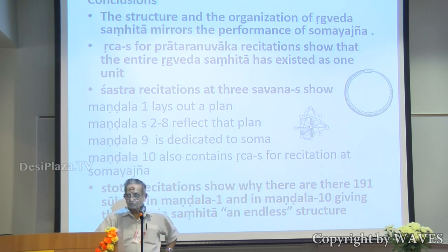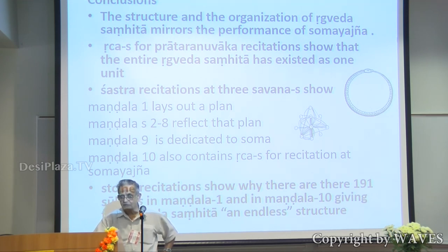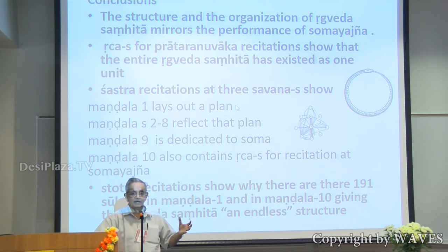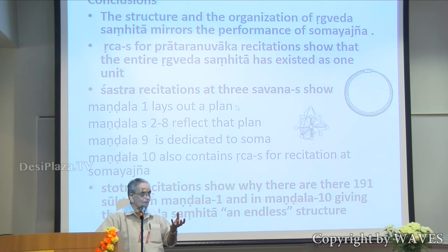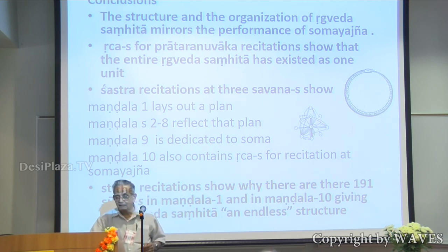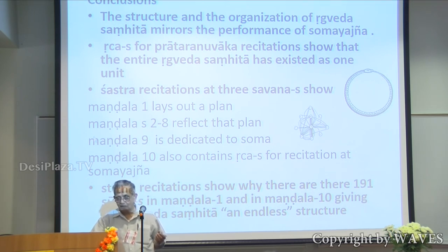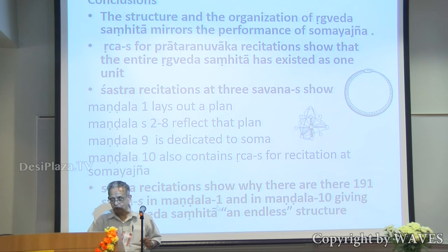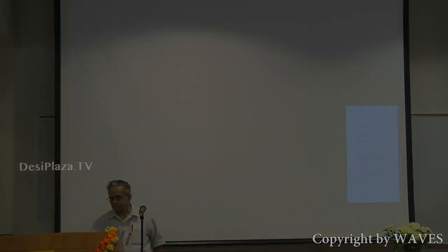The conclusion: the structure and organization of Rigveda mirrors the performance of Soma yajna. The richas for Prataranavaka recitations show that the entire Rigveda existed as one unit — some people say the six family mandalas were compiled first and the others came later. The shastra recitations show that Mandala 1 lays out the plan, Mandalas 2–8 reflect the plan, and Mandala 9 is dedicated to Soma. The stotra recitations show why there are 191 suktas in Mandala 1 and Mandala 10. Thank you.